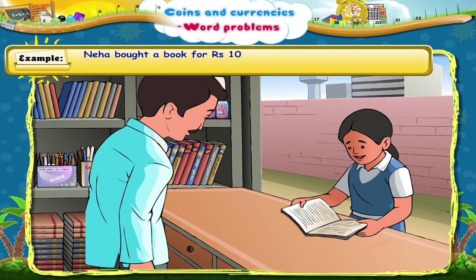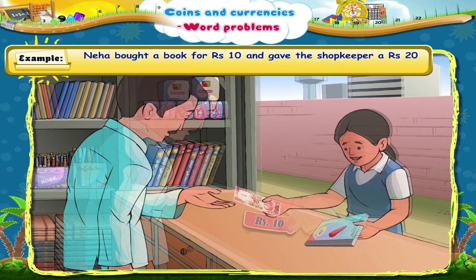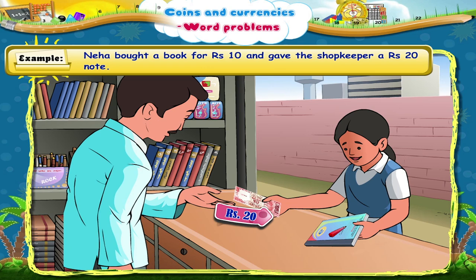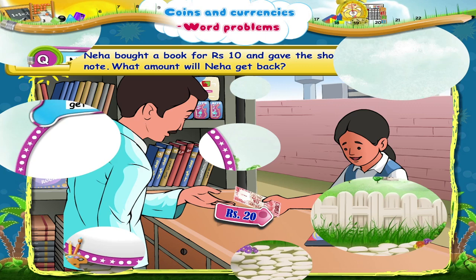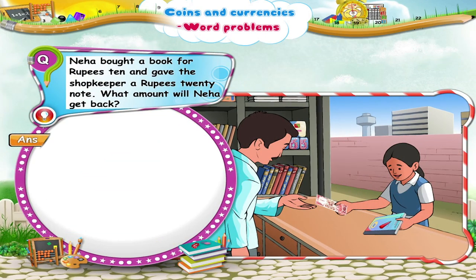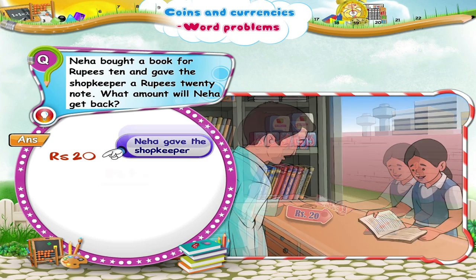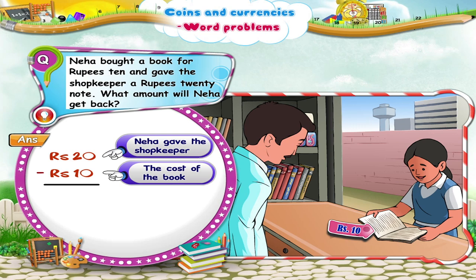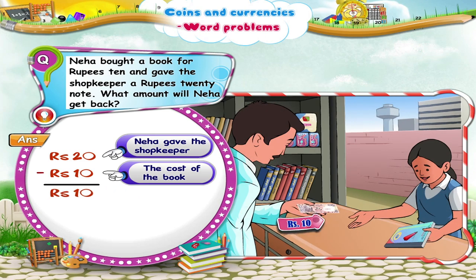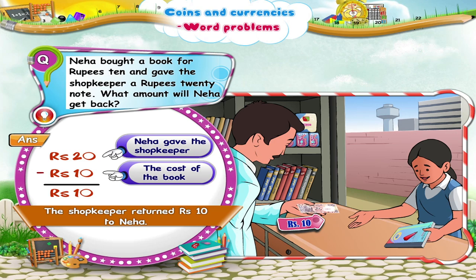Finally, Neha bought a book for rupees 10 and gave the shopkeeper a rupees 20 note. What amount will Neha get back? From the rupees 20 that Neha gave the shopkeeper, subtract the cost of the book, which is rupees 10. You get rupees 10. So, the shopkeeper returned rupees 10 to Neha.